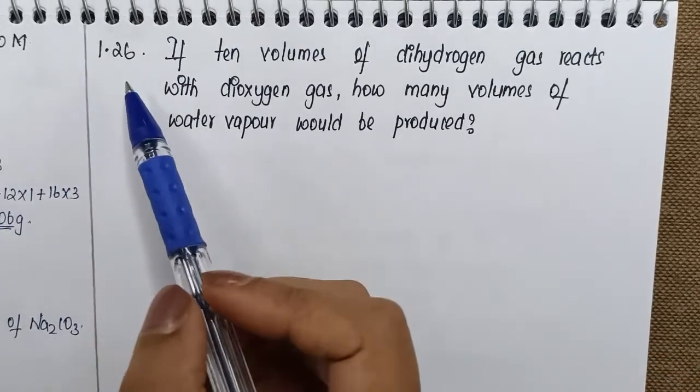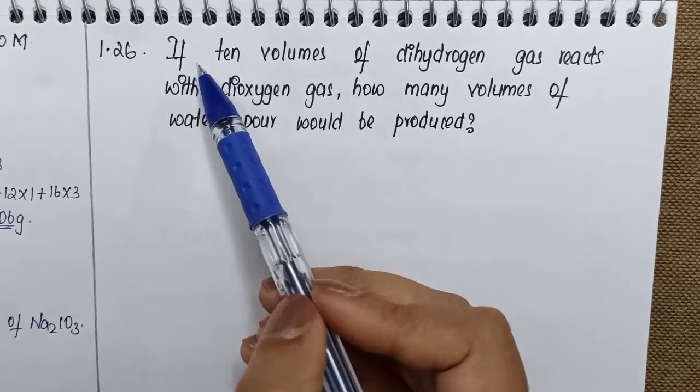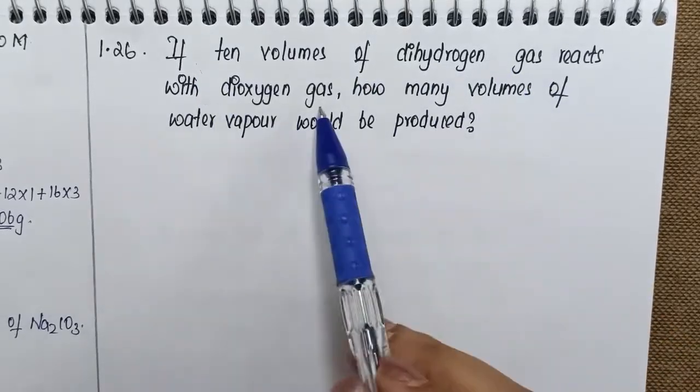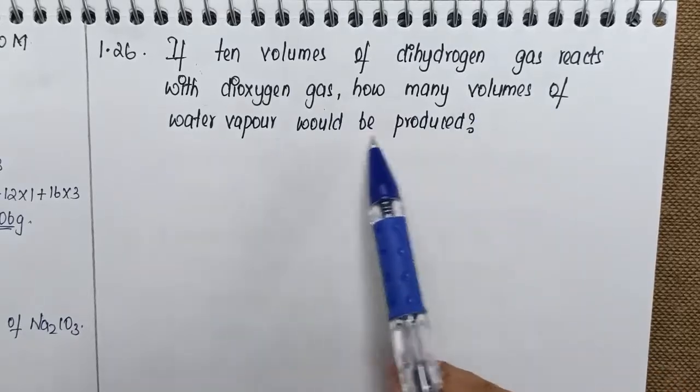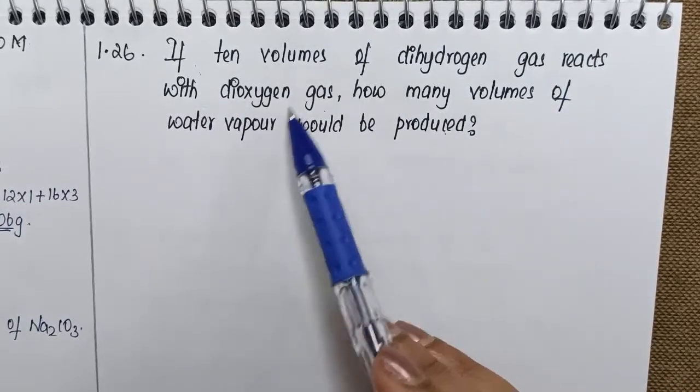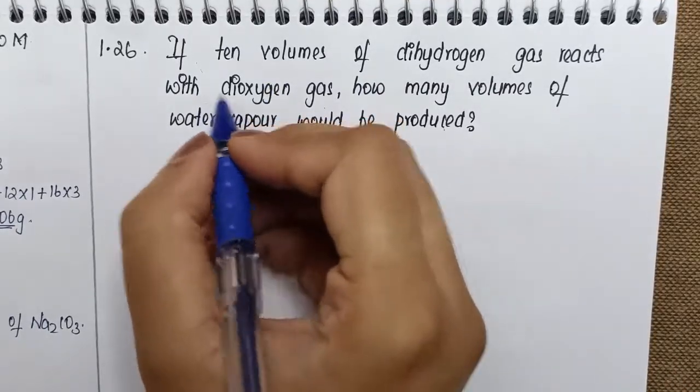So students, next question is 1.26: If 10 volumes of dihydrogen gas reacts with dioxygen gas, how many volumes of water vapor would be produced? For such questions, the first thing is to write a balanced equation.